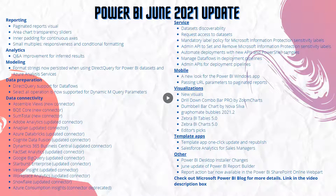Welcome to the June 2021 Power BI update. There are loads of updates on connectors this time around. Direct query support for dataflows is now generally available. On top of that, previews of the paginated report visual, small multiples, and direct query for Power BI datasets and Azure Analysis Services are still ongoing and received some updates this month.